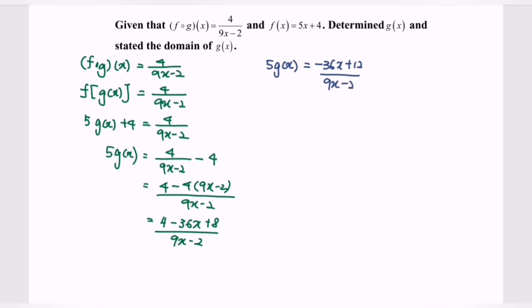Next g(x) will be equal to (-36x + 12)/[5(9x-2)]. So here we have the function of g(x).